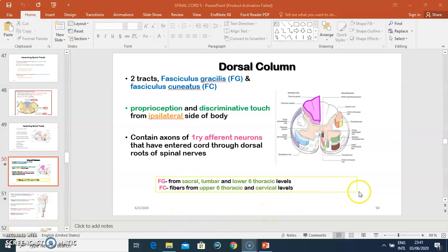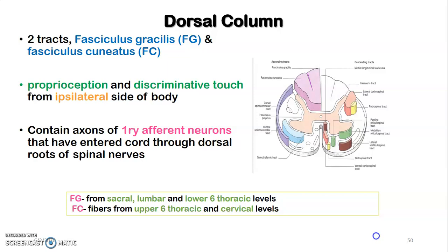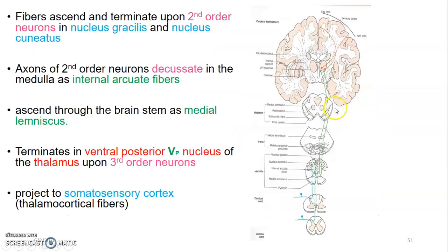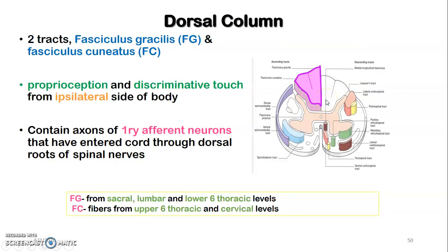We continue with our lecture series on pathways or tracts. We had started discussing the ascending pathway, so I'll go straight to the tracts located on the dorsal column. From the dorsal median sulcus, we have fasciculus gracilis and fasciculus cuneatus. These carry proprioception and discriminatory touch from the ipsilateral — same side — of the body.